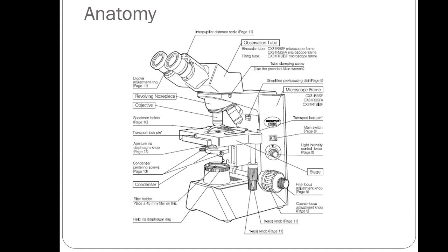This is a sketch of the microscopes that we have at DVC — a classic light microscope. Starting at the top where you look through, these are called the ocular lenses. They have a magnification of 10 times, so just by looking through the ocular lenses you get a magnification of 10 — things increase by 10 times.